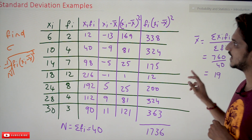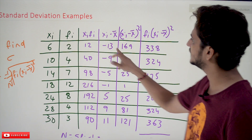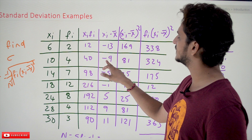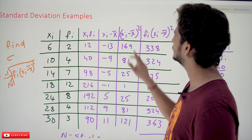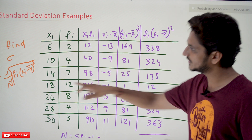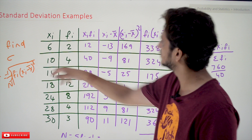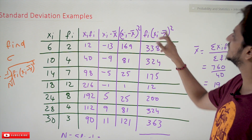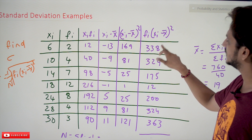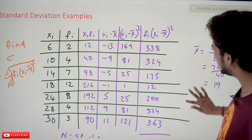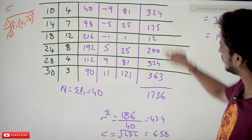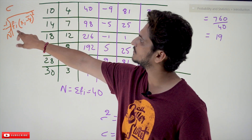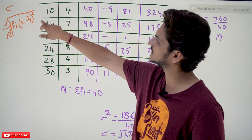After identifying the mean value, we find xi − x̄: the deviations are −13, −9, and so on for all values. Similarly, we then square each deviation (xi − x̄)², giving the squared values. After that, we multiply each squared deviation by fi to get fi(xi − x̄)².